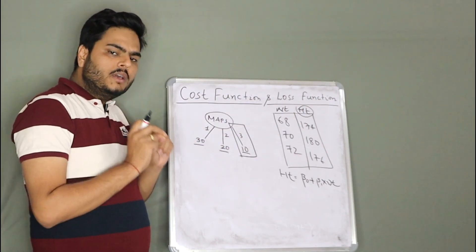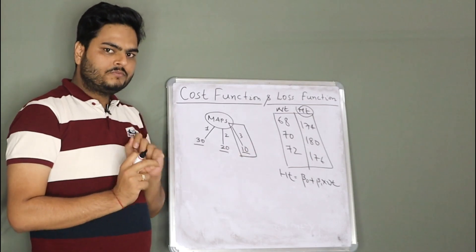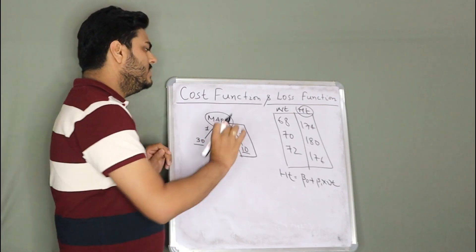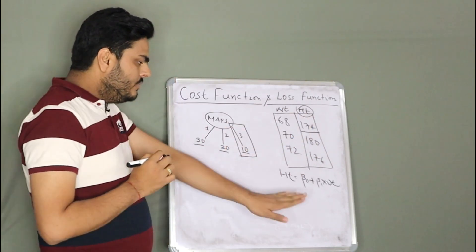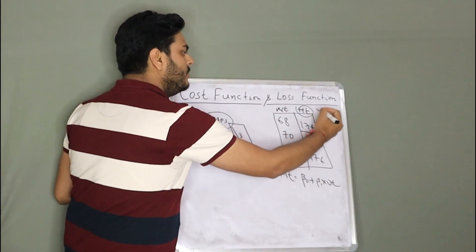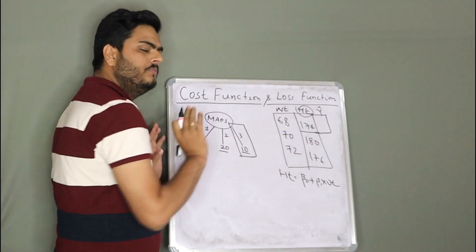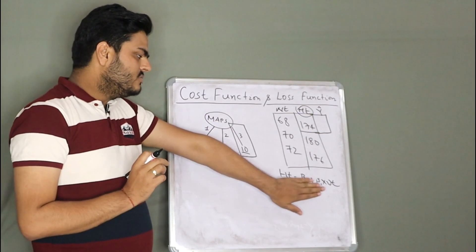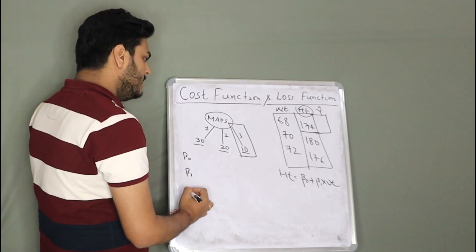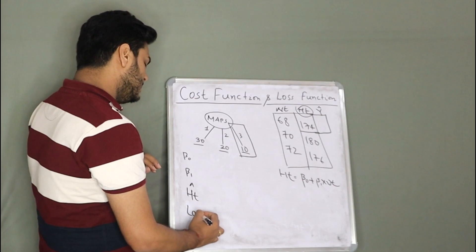Now, what is the loss in this case? Loss is nothing but the difference between actual and predicted. So the actual height is 174, and if we put some value of beta_0 and beta_1 and compute y-hat, then y-hat minus y is the loss for that row. Let us understand this with some examples. I will create a simple table with columns: beta_0, beta_1, predicted height, and loss.